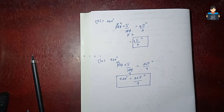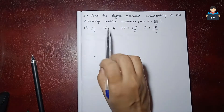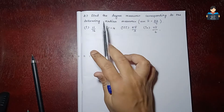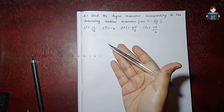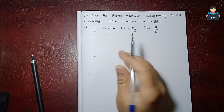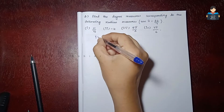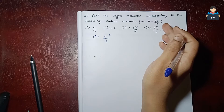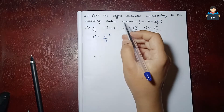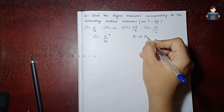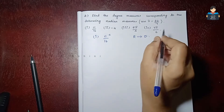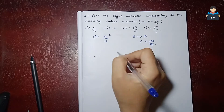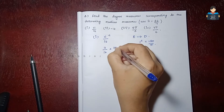Now we will see the second sum: Find the Degree Measure Corresponding to the Following Radian Measure. In the first sum we converted degree to radian; now we convert radian to degree. First subdivision: 11 pi by 16 radian. To convert radian to degree, 1 radian equals 180 by pi. So: 11 by 16 into 180 by pi.